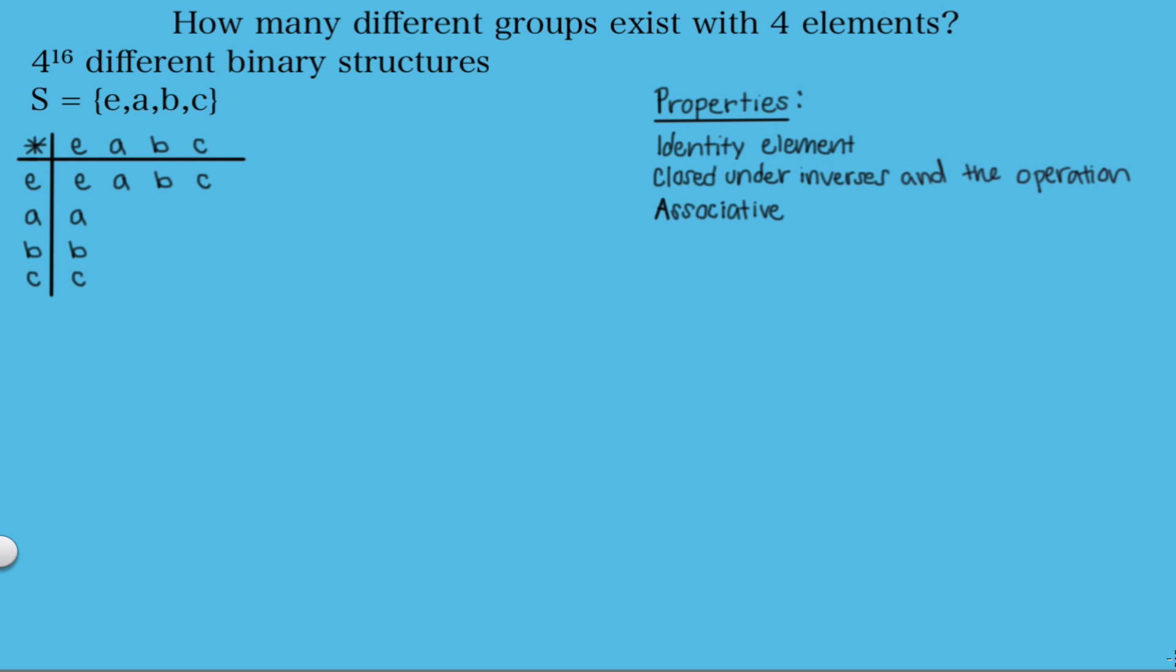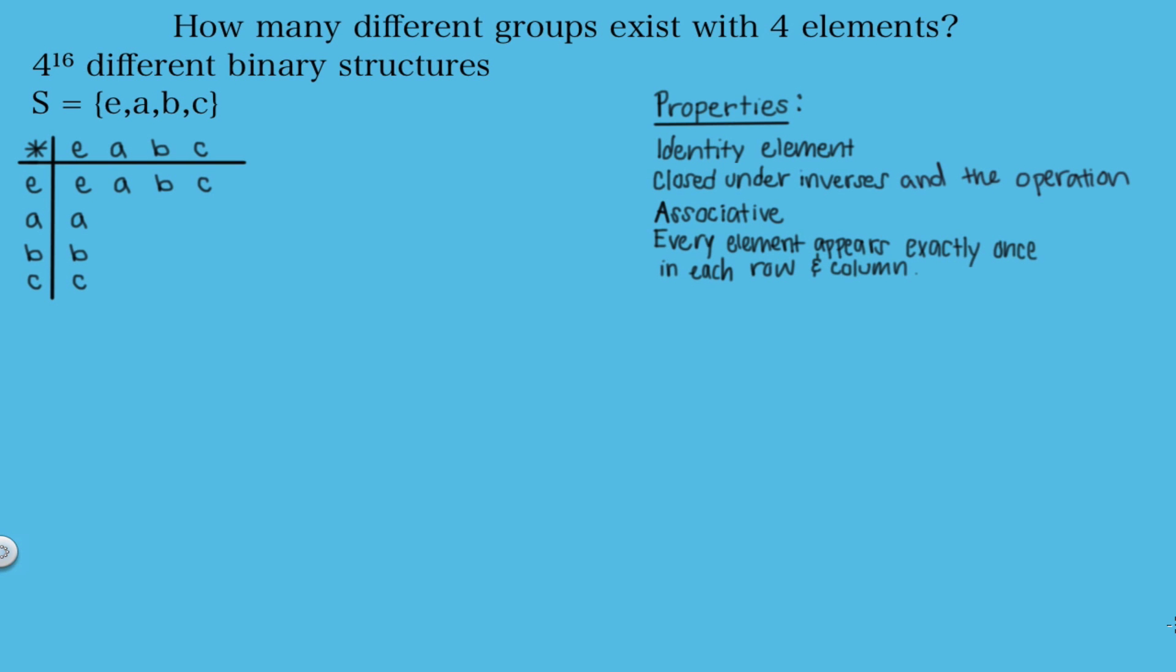We also know the operation must be associative. And then finally we have this last property which is less obvious than the ones above that were really just taken from the definition of a group. This property is that every element must appear exactly once in each row and column. So since we have an A here, we can't have another A in this column. Same here, since we have an A here, we can't have another A in this row. And to see the proof of this last property, you can click on this link here.